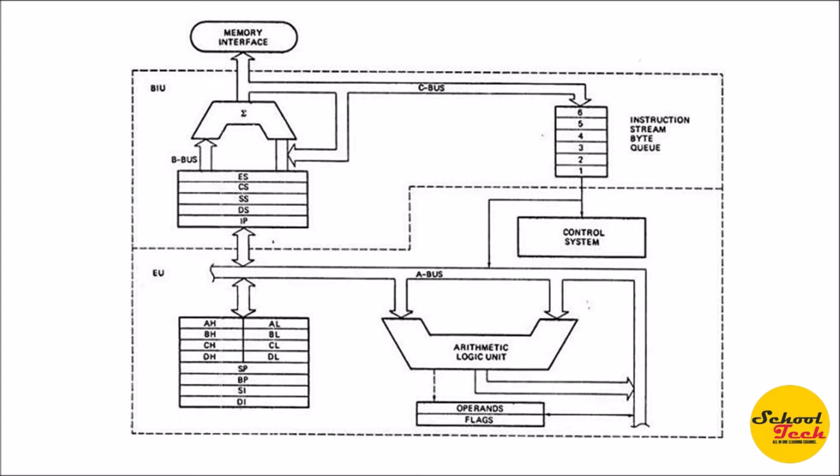The ALU (Arithmetic Logic Unit) is the main processing hardware and part of the EU. It performs different calculations such as add, subtract, multiply, divide, logical AND, OR, etc. The result generated by the ALU can be stored in a GPR or in memory — this technique is called execution of the instruction. There is also a special purpose register called the flag register, which is linked with the ALU to reflect the status of a result.